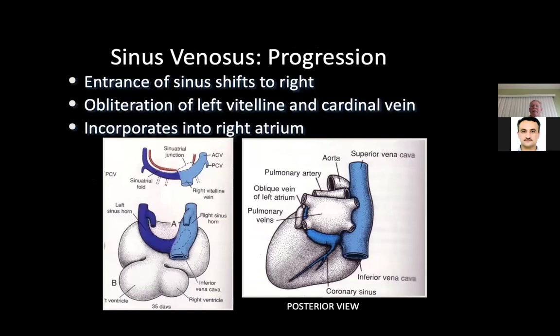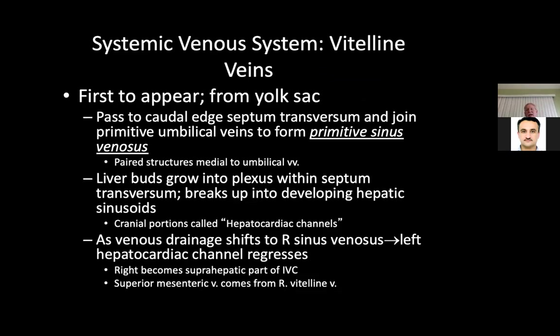As it progresses, the entrance of the sinus shifts to the right, because it's going to form the IVC, SVC, and part of the right atrium. From the yolk sac, as it passes to the caudal edge of the septum transversum and joins the primitive umbilical veins, it forms the primitive sinus venosus. If this isn't formed properly, you get a sinus venosus ASD.